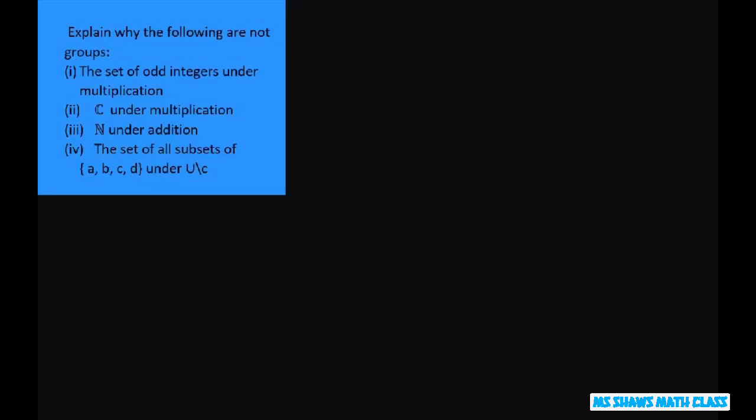So for example, the set of odd integers under multiplication. The inverse of A equals A inverse, which equals 1 over A. But 1 over A is not a member of the integers, so it's not closed.